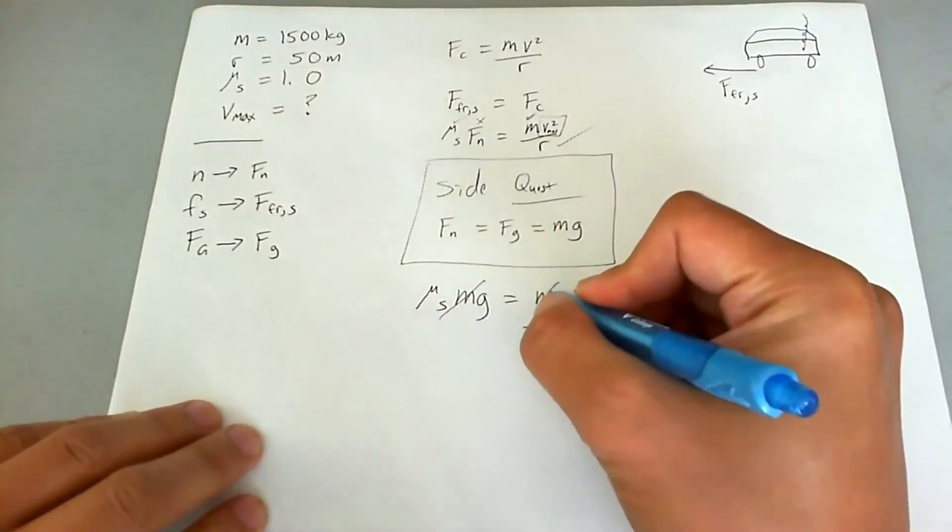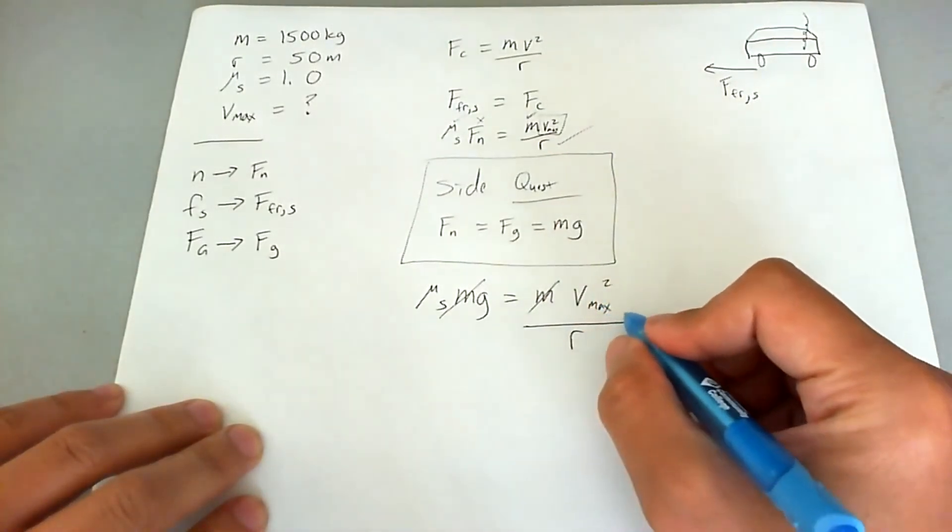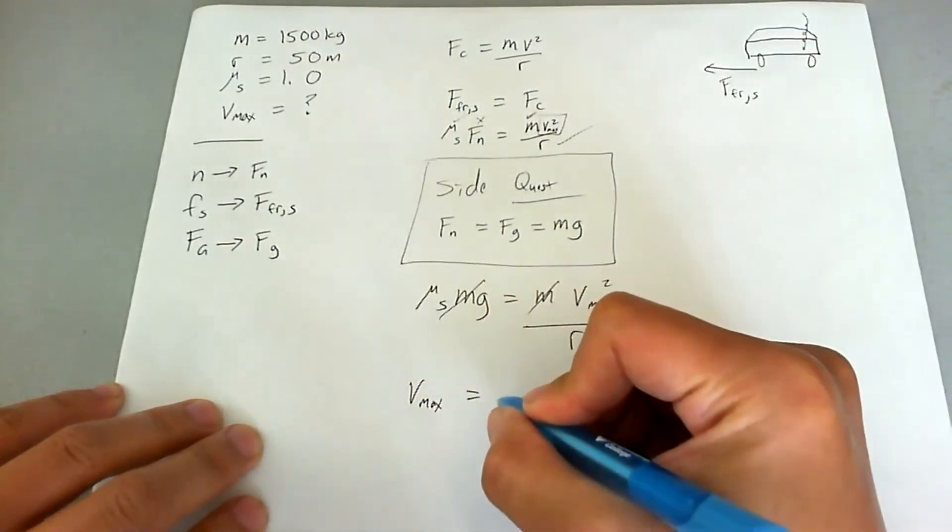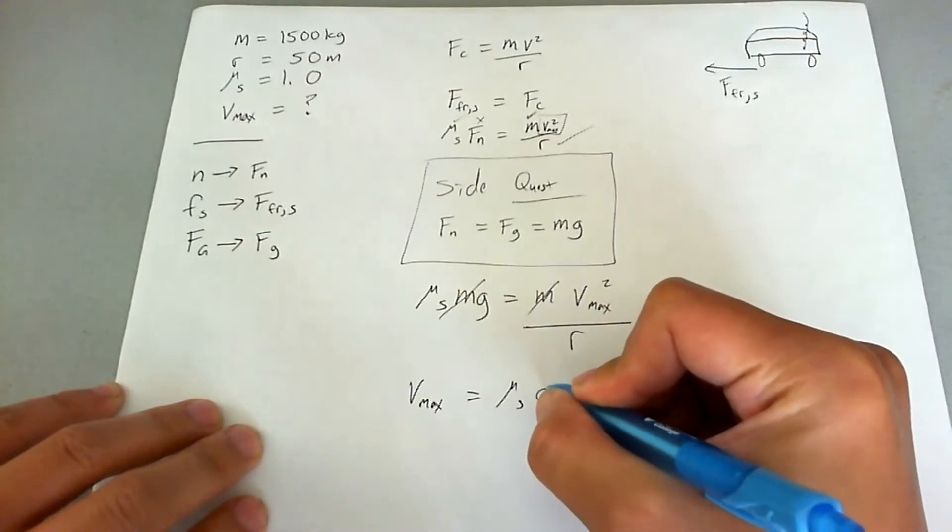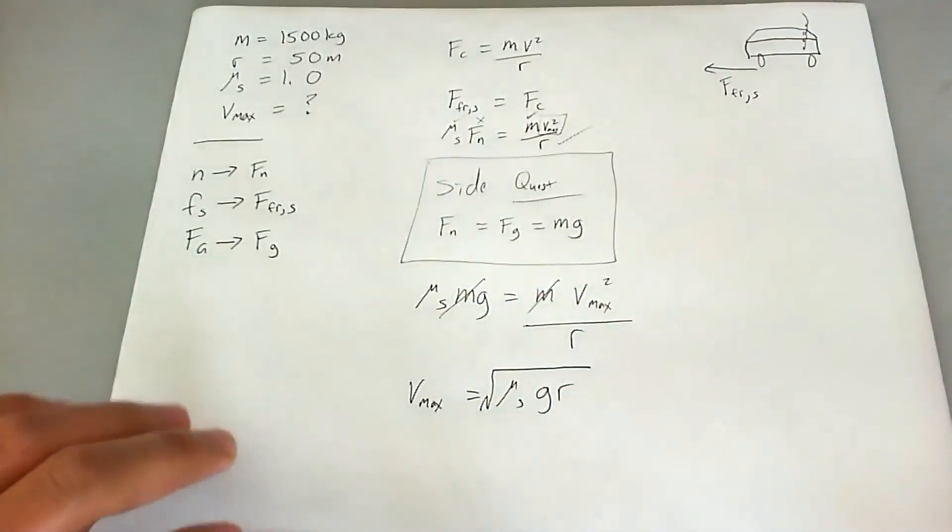Luckily for us, the masses will cancel out. So that just makes things a little easier. We're going to go ahead and isolate v. So v max is now going to be mu sub s g r. And we'll take the square root of that.